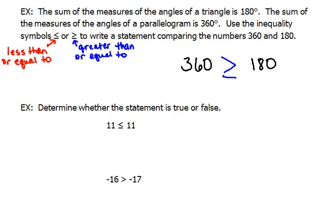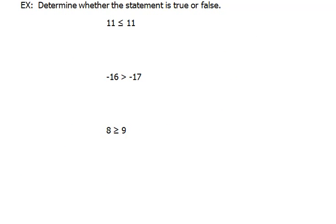Now our next example again is something that we have done before. We're supposed to determine whether the statement is true or false. This first statement says 11 is less than or equal to 11. We know that 11 is not smaller than 11, but because it has or equal to, as long as one of those items is true, then the entire statement would be true. So 11 is equal to 11, therefore that statement is true.